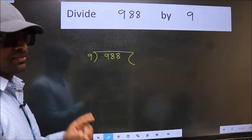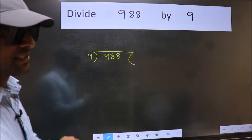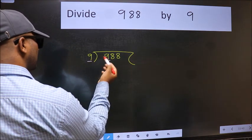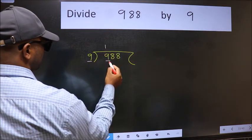This is your step 1. Next. Here we have 9 and here 9. When do we get 9 in 9 table? 9 once 9.